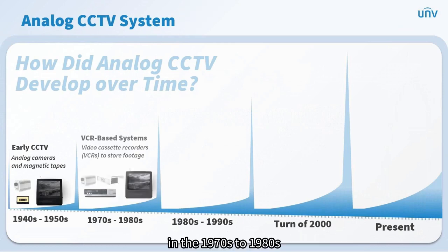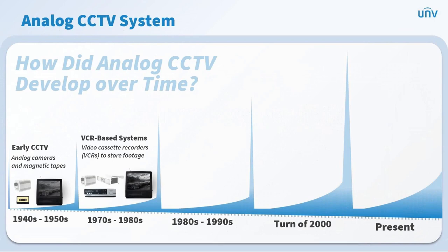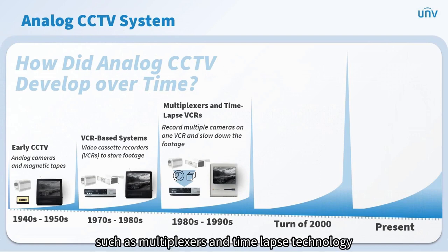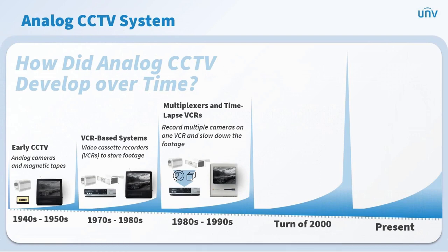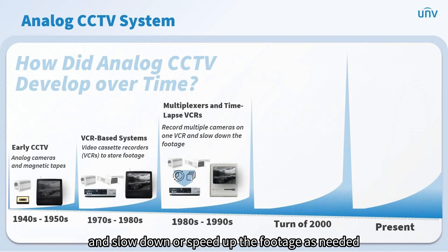In the 1970s to 1980s, people used videocassette recorders to store footage. In the 1980s to 1990s, some new features were added to VCRs such as multiplexers and time-lapse technology. These features allowed some recorders to record multiple cameras on one VCR and slow down or speed up the footage as needed.